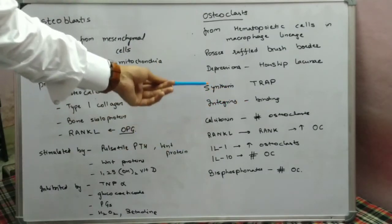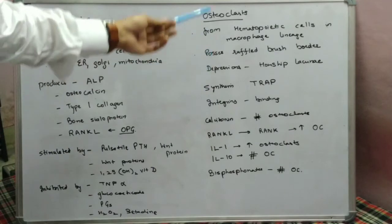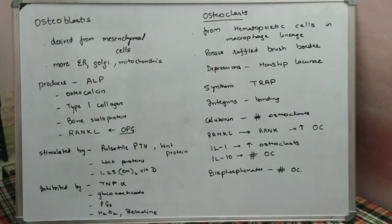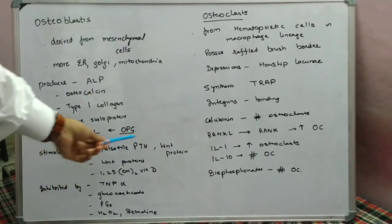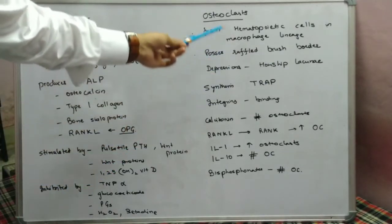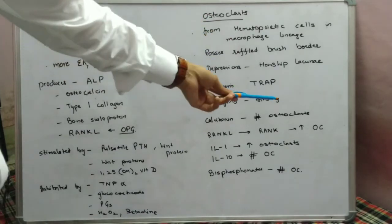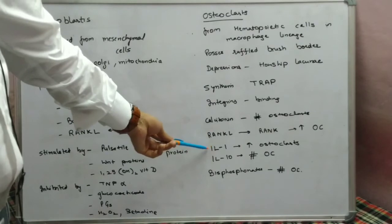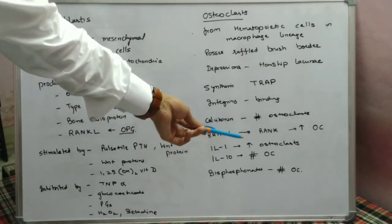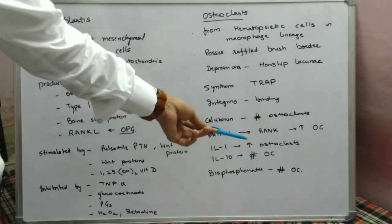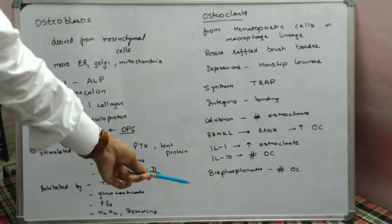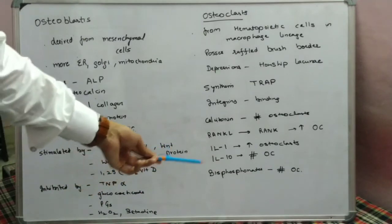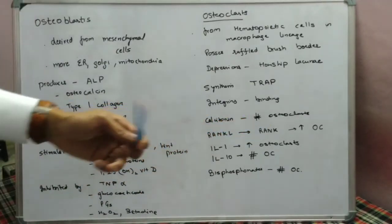Various mediators affect osteoclast function. Calcitonin inhibits the osteoclast. RANK ligand attaches to the RANK receptor on the osteoclast to increase its production. Interleukin-1 increases osteoclast activity, whereas interleukin-10 inhibits it. Bisphosphonates act by inhibiting osteoclast activity.